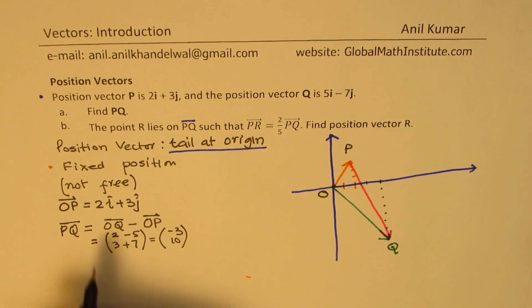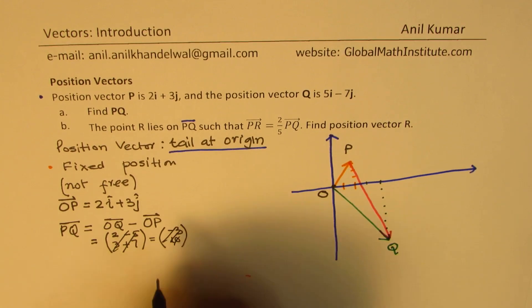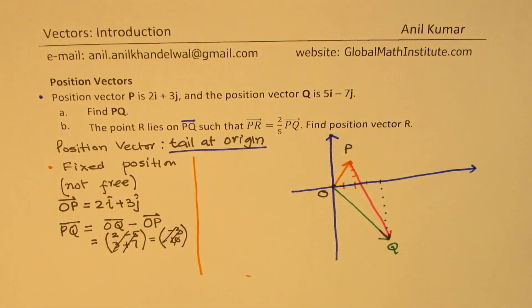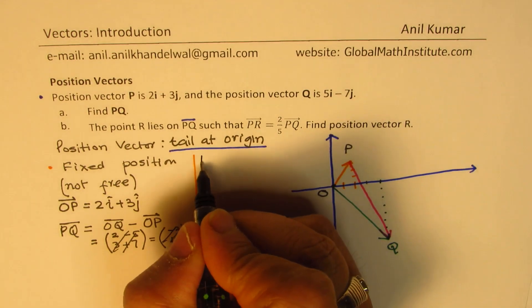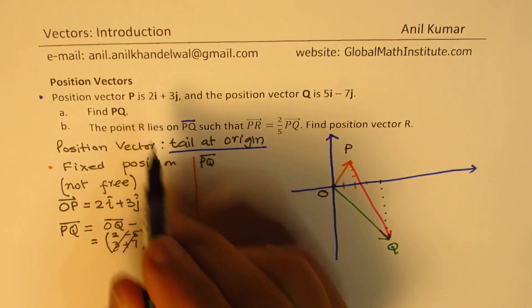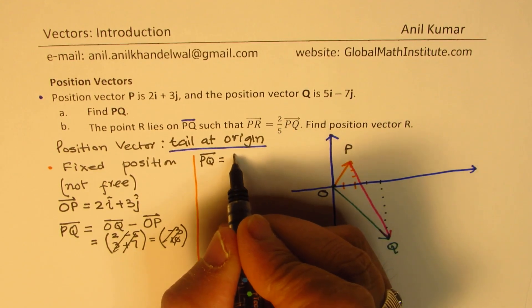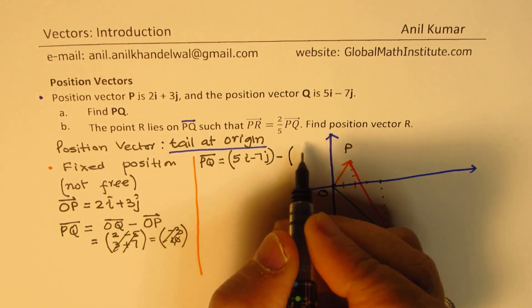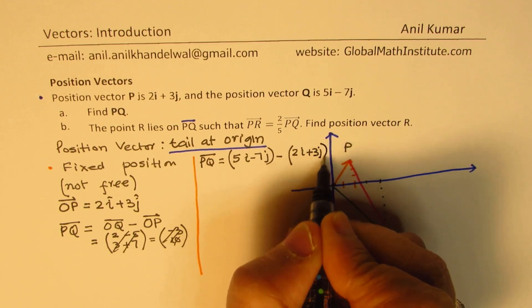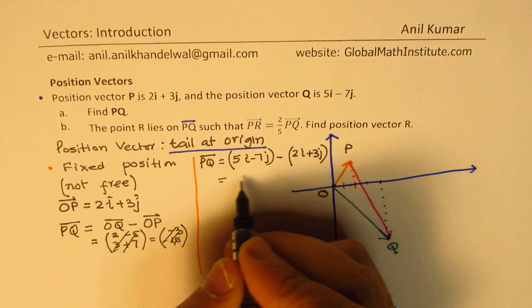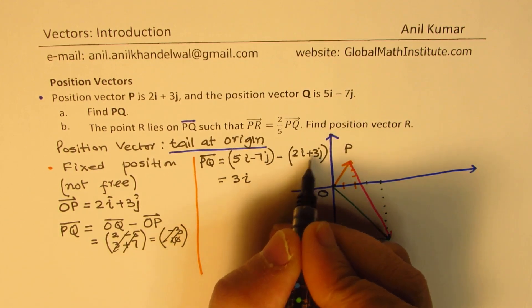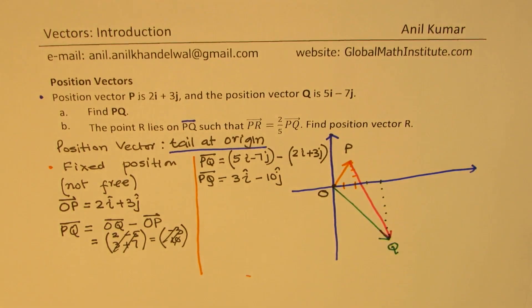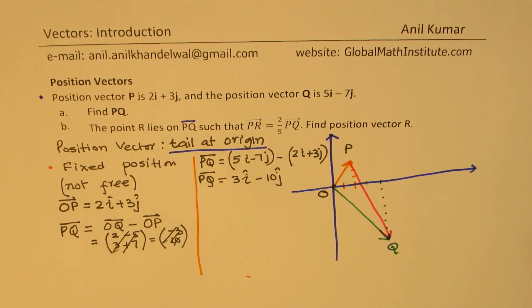Sorry, it should be OQ. We wrote in the reverse way. Sorry for that. Let's redo this. So the vector P to Q is Q minus P. So it is equal to 5i minus 7j, take away 2i plus 3j. That gives you 5 minus 2 is 3 and minus 7 minus 3 is minus 10j. So that's your vector PQ. Is that clear to you? So that is how we find the vector PQ.